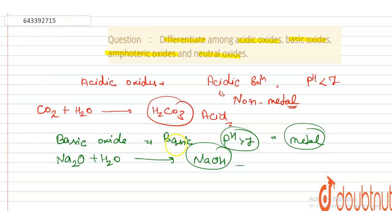Now we move on to the third type, which is amphoteric oxides. Amphoteric oxides are those oxides which have both acidic and basic nature. Examples will be lead oxide and aluminum oxide.